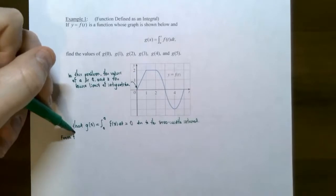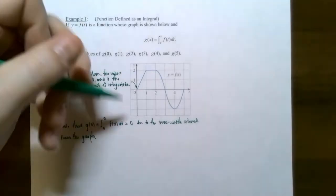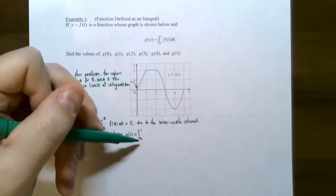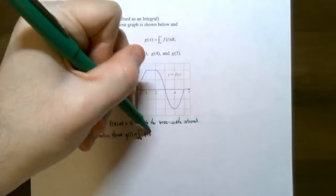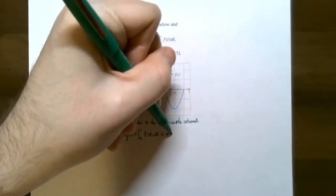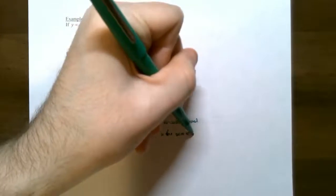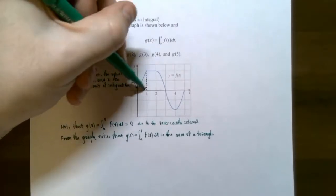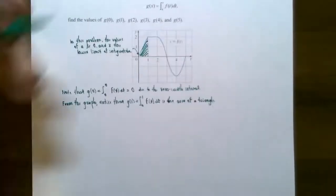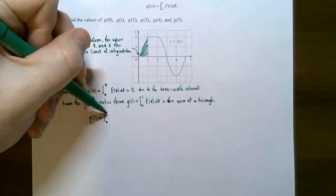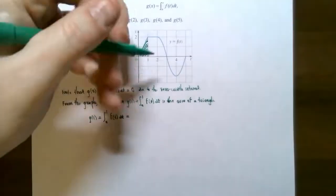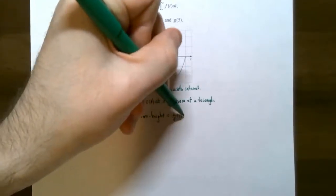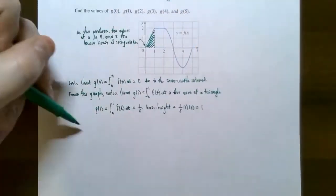From the graph, g of one is defined to be the definite integral from zero to one of f of t dt. This is the area of a triangle from zero to one — the area so far between t equals zero and t equals one. Using one-half times base times height, with base equal to one and height equal to two, g of one equals one.